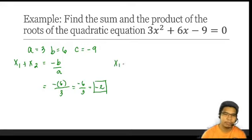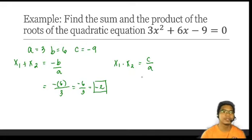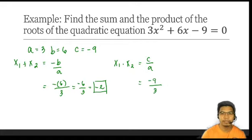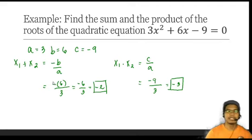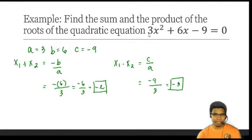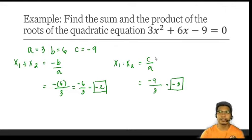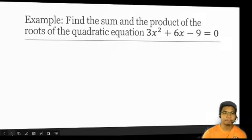Now for the product: x₁ × x₂ = c/a. Substituting the values, we have c = -9 over a = 3, so -9 divided by 3 is -3. Notice that we don't know the individual values of x₁ and x₂, but we are able to solve for their sum and product using the formulas -b/a and c/a.